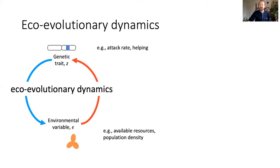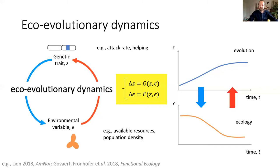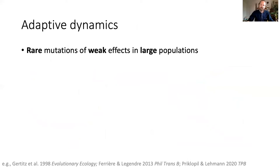Whether feedbacks are extrinsic or intrinsic, the study of these has been the focus of many evolutionary ecology studies, and references on this slide offer useful reviews of how different theoretical frameworks have been used over the last 50 years. Broadly, these studies seek to track joint changes in genetic traits and ecologically relevant conditions, which can be represented as a coupled dynamical equation. One framework that has been particularly useful in disentangling these is the so-called adaptive dynamics framework.